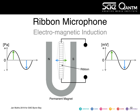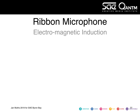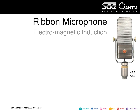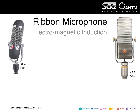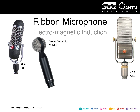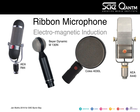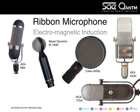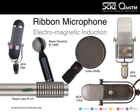Typical examples of ribbon microphones are the AEA A440, the RF84 — a very popular and fairly highly priced microphone — the Beyerdynamic M130N, and the Coles 3040L. RCA were really prominent with ribbon microphones like the 77DX. Another company to mention is Royer Labs with the R121.